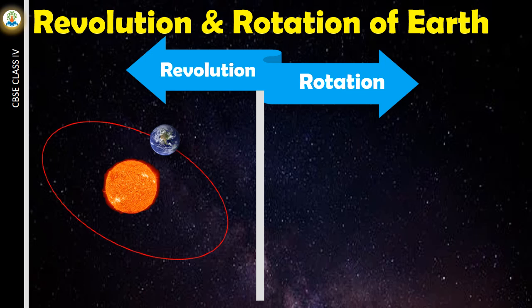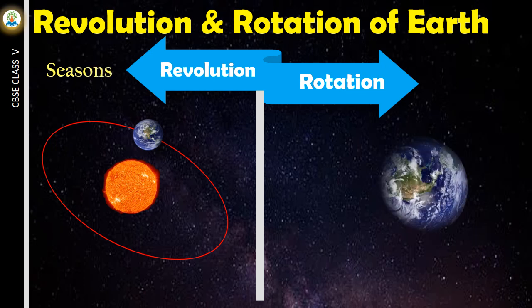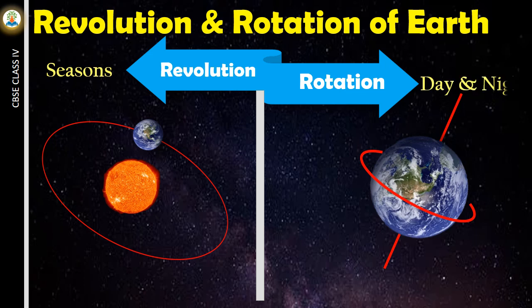Earth revolves around the sun in a fixed path called revolution of Earth. The revolution and the tilted axis of the Earth cause the seasons. Rotation of Earth on its axis causes day and night.